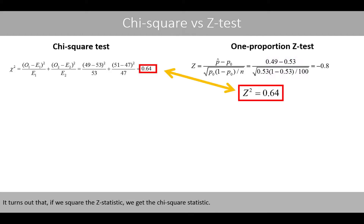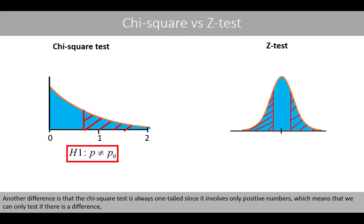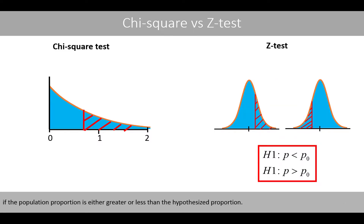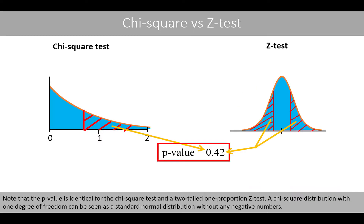It turns out that if we square the z-statistic, we get the chi-square statistic. Another difference is that the chi-square test is always one-tailed, since it involves only positive numbers, which means that we can only test if there is a difference. Whereas the z-test can either be one- or two-tailed, which means that we can test if there is a difference between the proportions, as well as if the population proportion is either greater or less than a hypothesized proportion. Note that the p-value is identical for the chi-square test and the two-tailed one-proportion z-test.